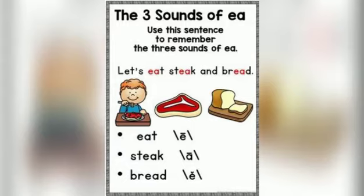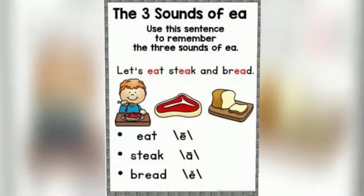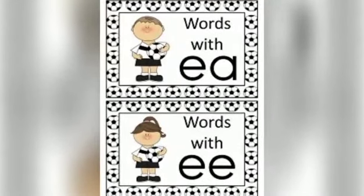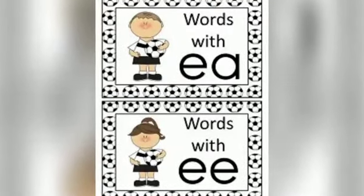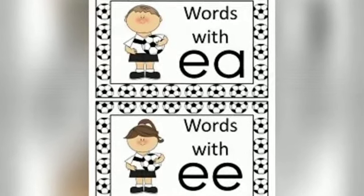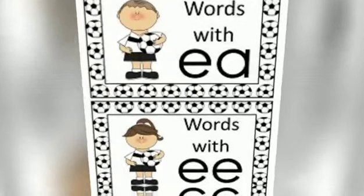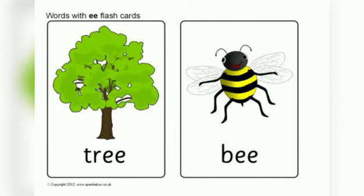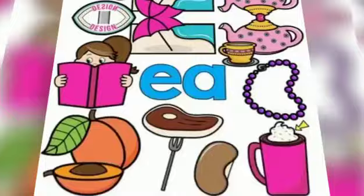But today we are concerned with the E sound of EA only. So let's read some words with EA and double E. We have here 'tree' and 'bee.' T, R, double E. The sound of double E here is E.